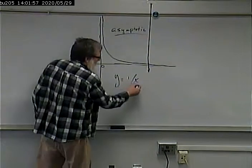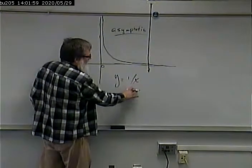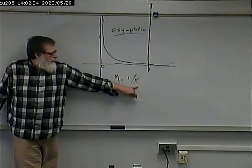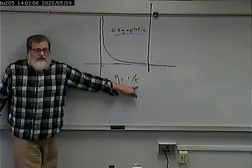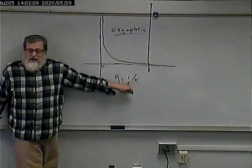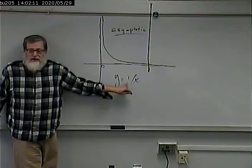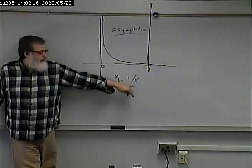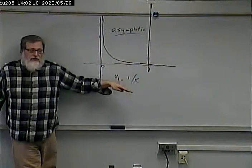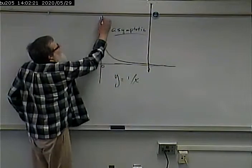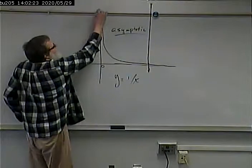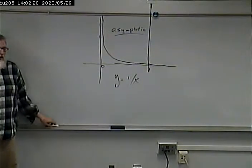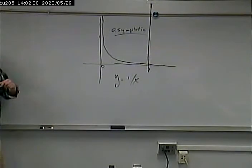By the same token, if we make x a small decimal — like 0.1, then y is going to be 10; if we make it 0.01, then y is going to be 100. There is no value when x equals zero, because 1/0 is undefined. Therefore, x can never make it to zero; x will extend indefinitely. That's what an asymptote is, and that's what asymptotic means.